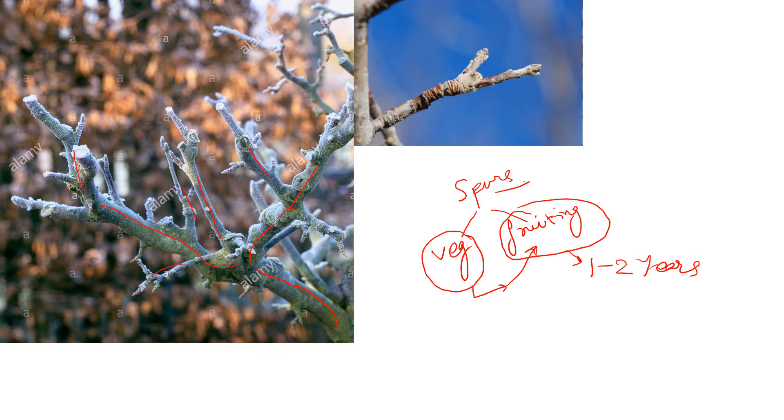These spurs bear two kinds of buds: vegetative buds and fruiting buds. Those spurs which bear vegetative buds are known as vegetative spurs, and those which bear fruiting buds are known as fruiting spurs.